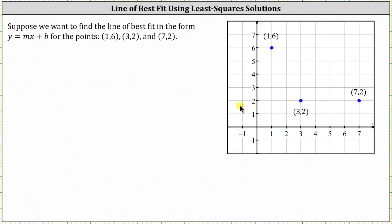Welcome to a lesson on how to determine the line of best fit using the least squares solution. Suppose we want to find a line of best fit in the form of y equals mx plus b for the points (1, 6), (3, 2), and (7, 2), which I've already graphed on the coordinate plane on the right.